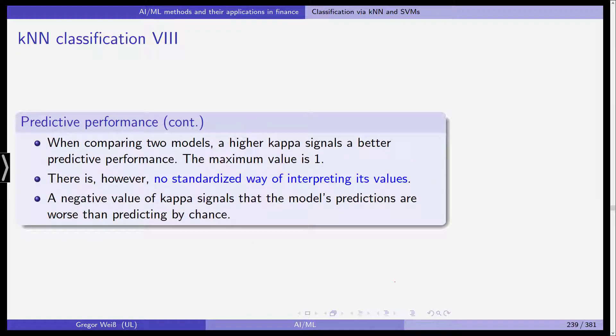When comparing two models, a higher kappa signals better predictive performance and the maximum value is one. However, there is no standardized way of interpreting its absolute values, so if you have two models, take the one with the higher Cohen's kappa. A negative value of kappa would signal that the model's predictions are worse than predicting by chance — even worse than setting all predictions constantly to one.